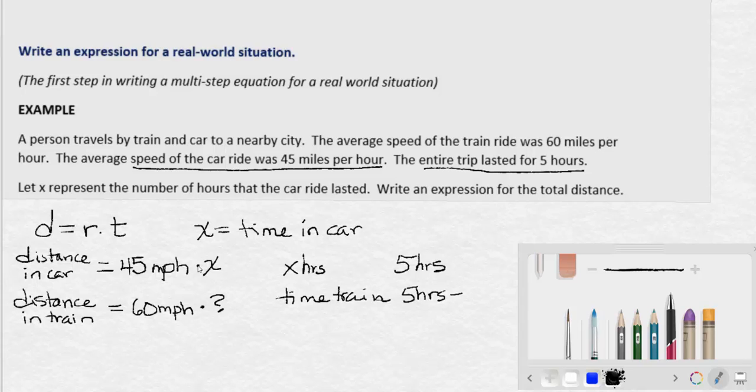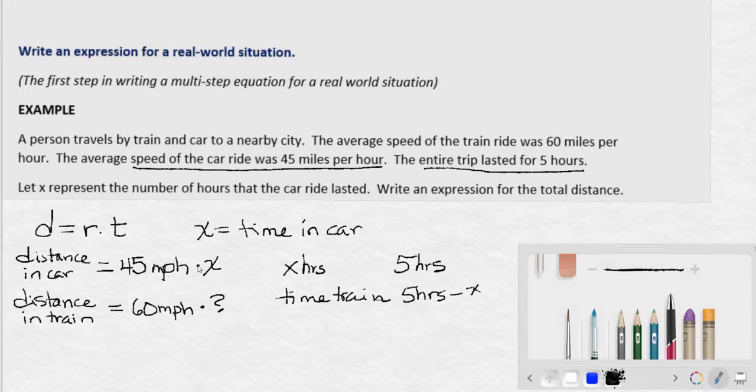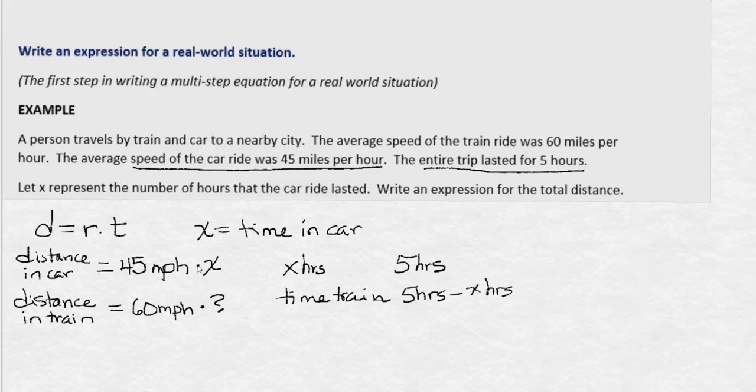If we were in the car for 2 hours, that would leave 3 for the train. If we were in the car for 4 hours, that would only leave 1 for the train, and so on. But we don't know how long we were actually in the car. We call that x, x hours.